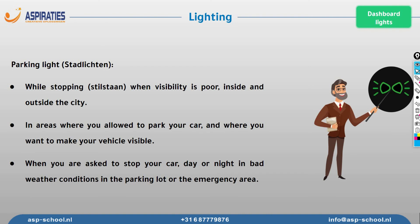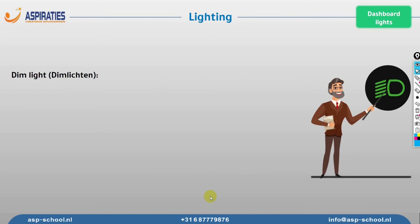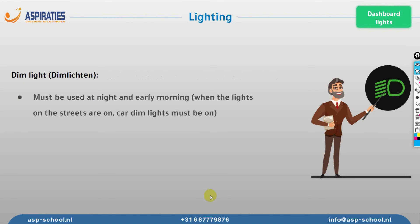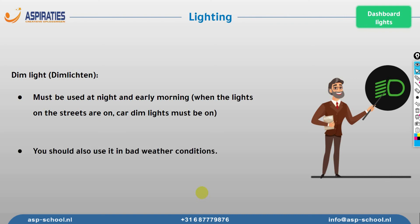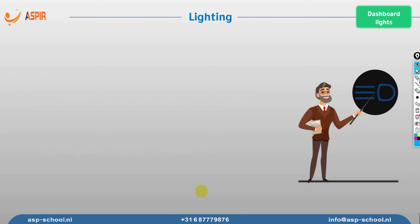Dim lights are the most common lights we use. You can use them during the day or night. The rule is: whenever street lights are on, you should put your dim lights on. You can use dim lights anytime — nobody will fine you for using them, and nobody will be bothered. If you're driving during the day in poor weather conditions, such as a rainy morning, you should also use your dim lights.